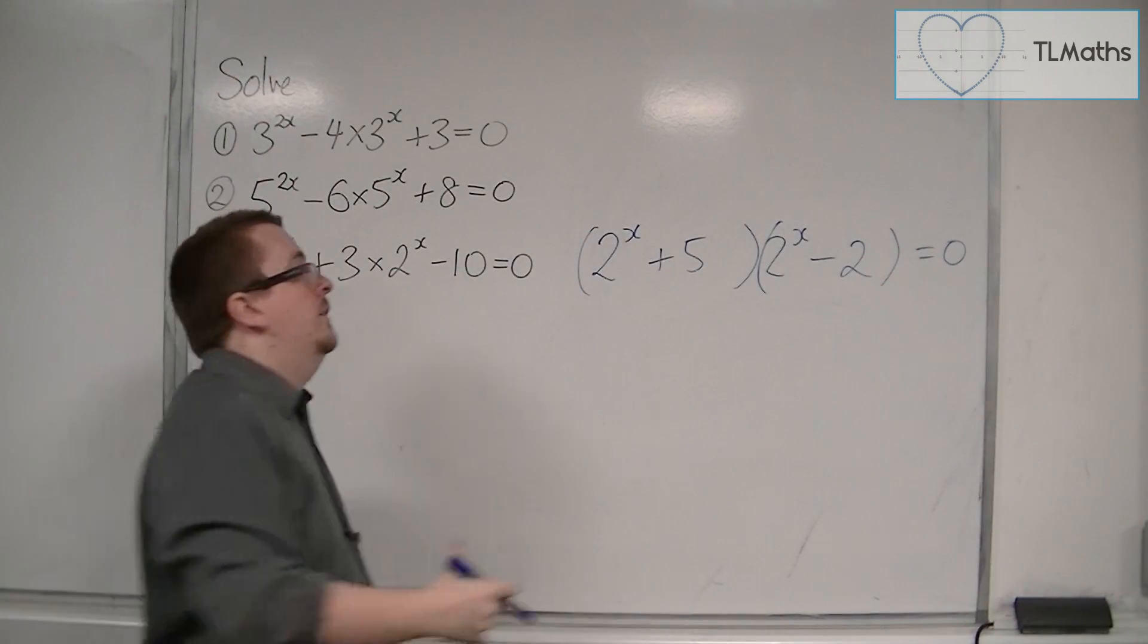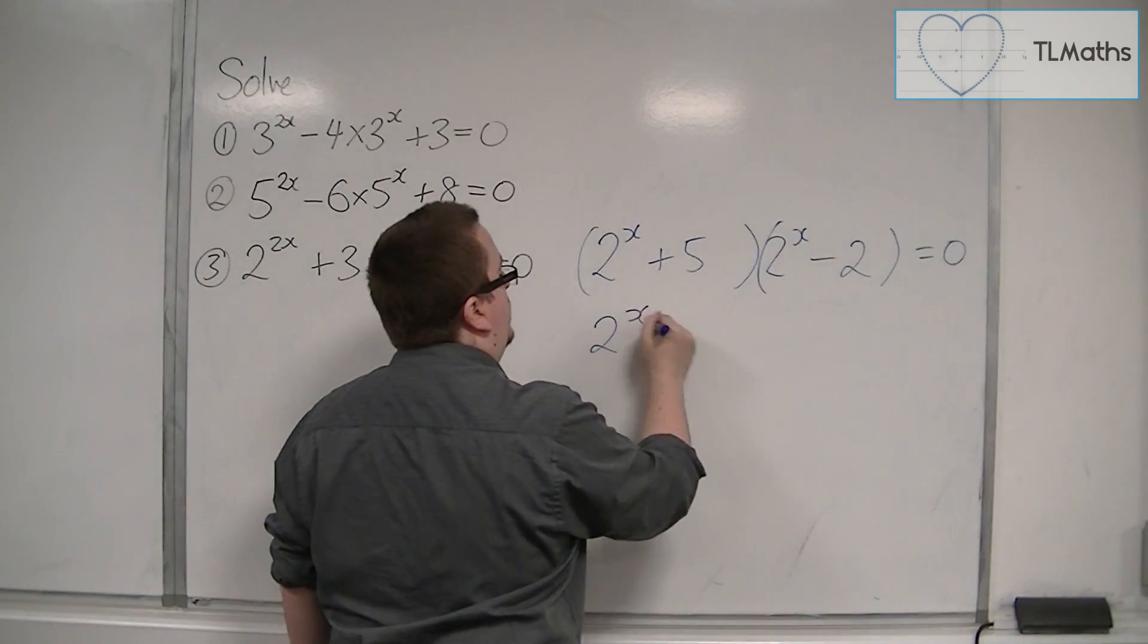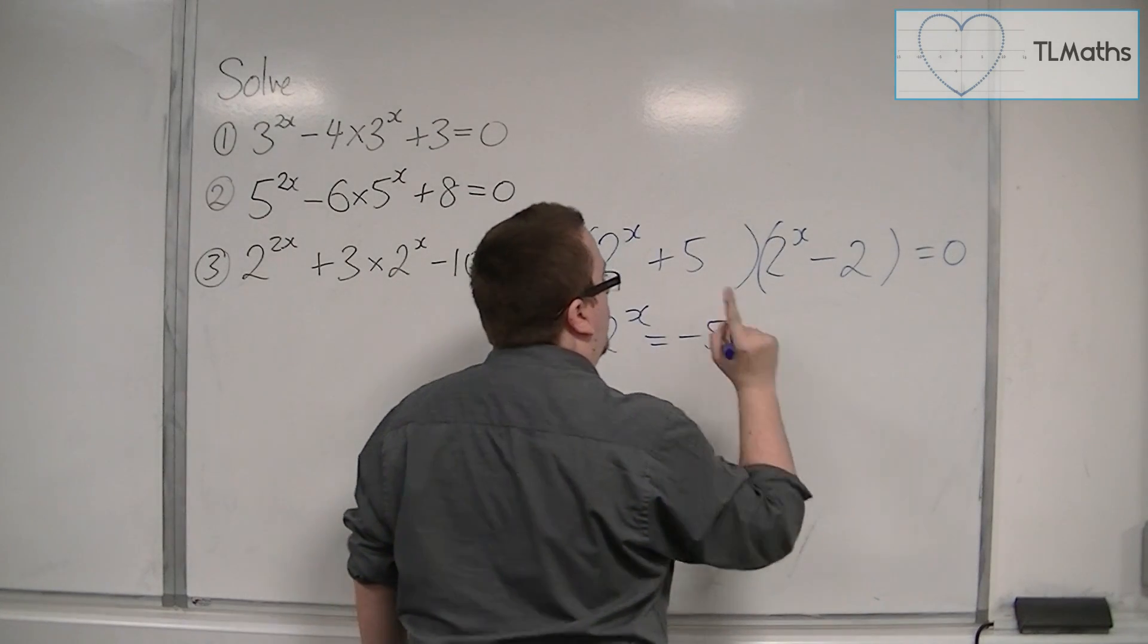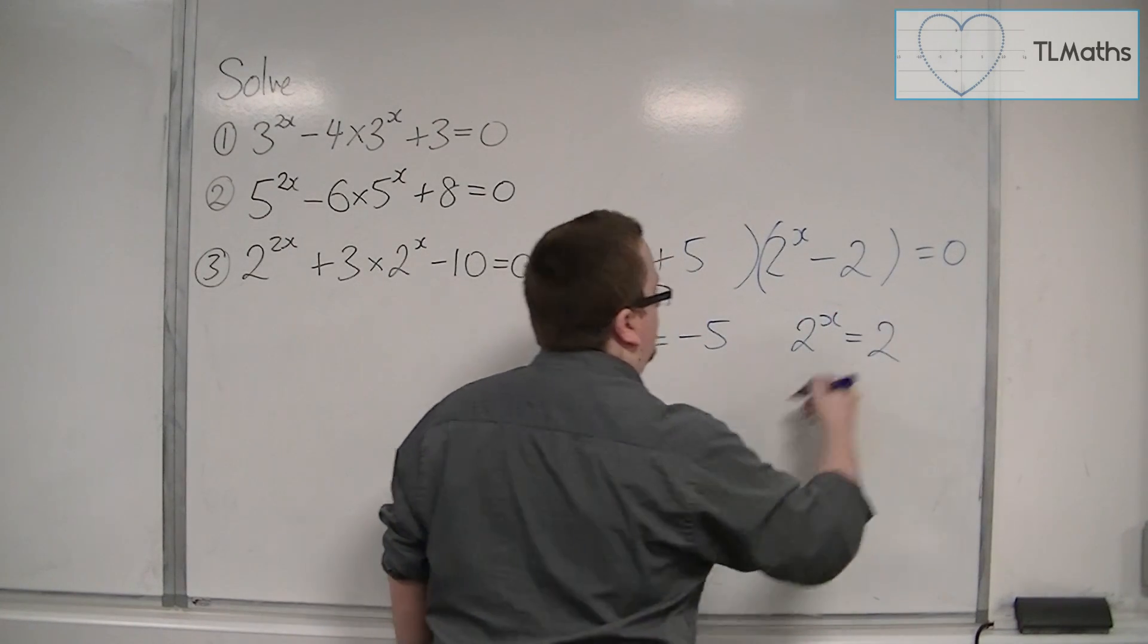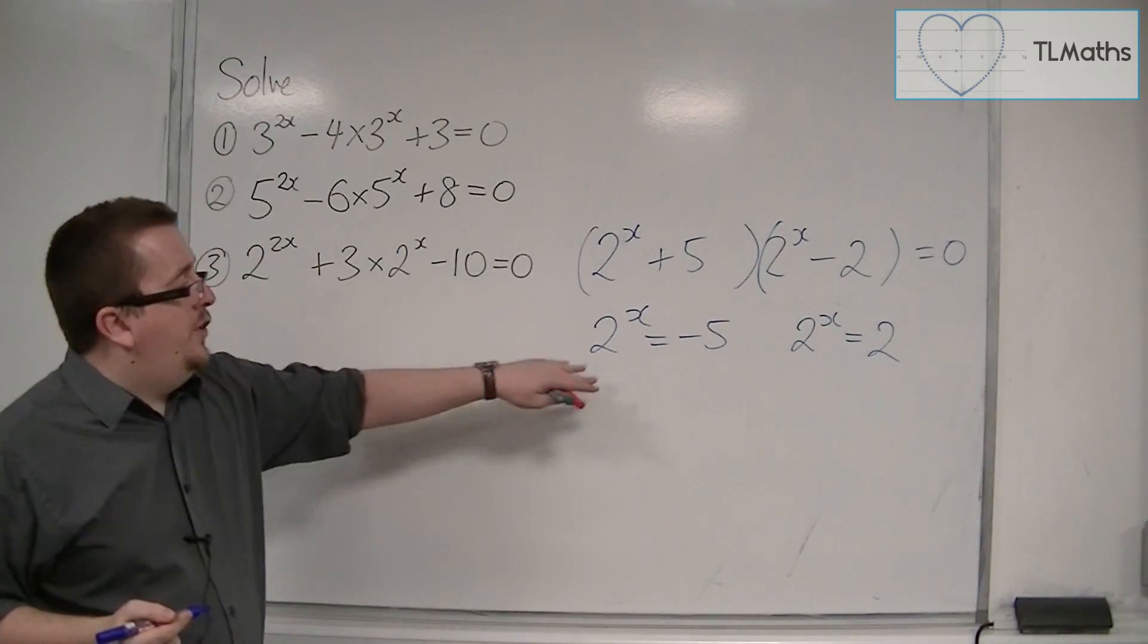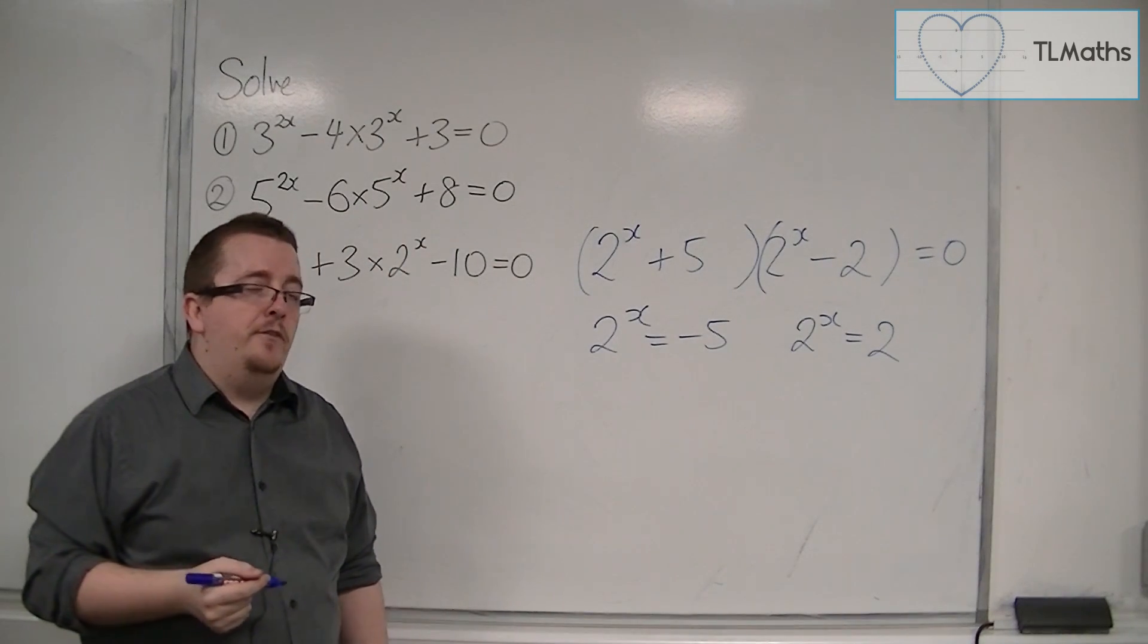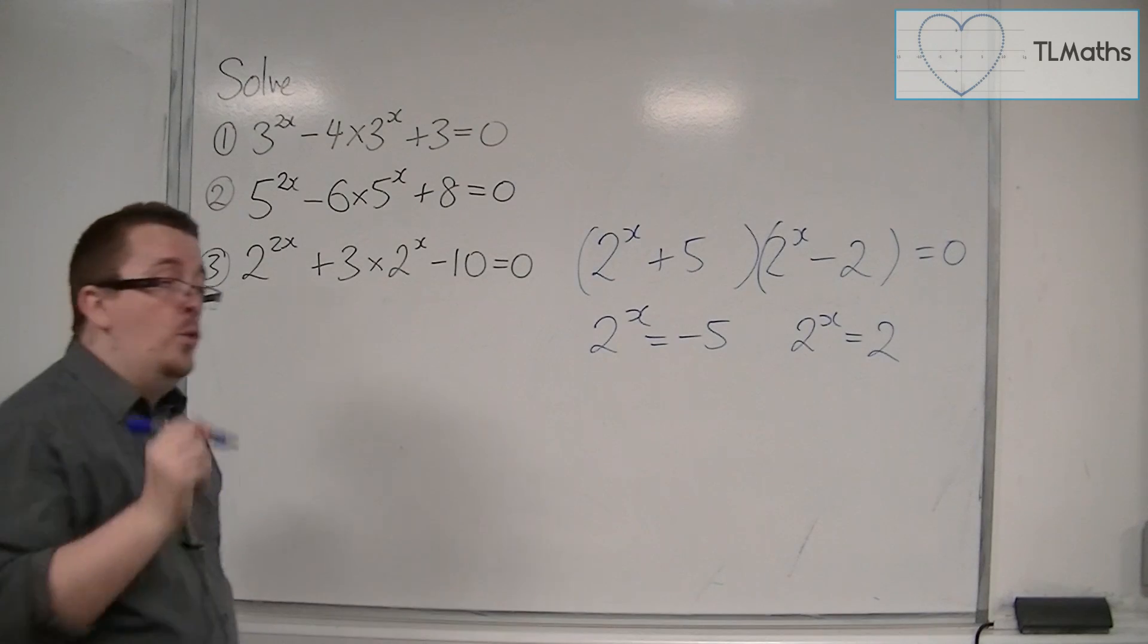So either 2 to the x must be equal to minus 5 or 2 to the x is equal to 2. Now 2 to the x is equal to minus 5 actually has no solutions.